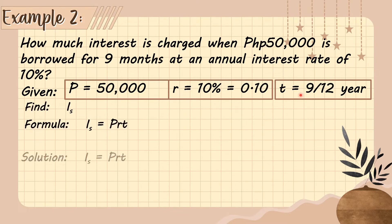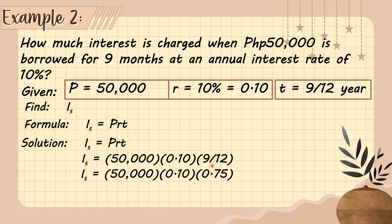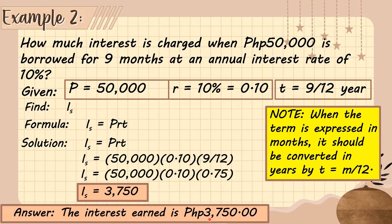Using the formula I_s = P × r × t, we substitute: 50,000 × 0.10 × (9/12). Since 9/12 equals 0.75, we have 50,000 × 0.10 × 0.75, which equals 3,750 pesos. So the interest charged is 3,750 pesos — that is the additional amount you need to pay on top of the loaned amount of 50,000 pesos.